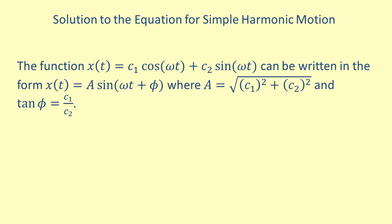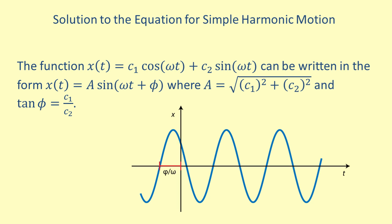The constant phi is called the phase shift, which shifts the graph left or right. We define the tangent of phi to be c1 over c2. To find phi, we need to first make sure that phi is in the correct quadrant, then take the inverse tangent to find a value for phi.